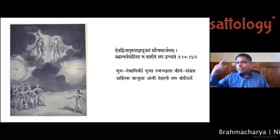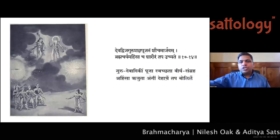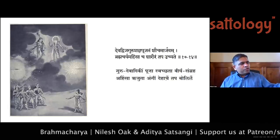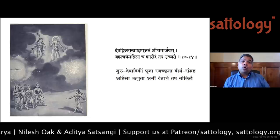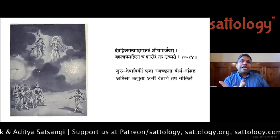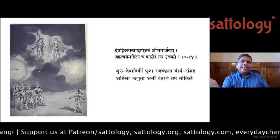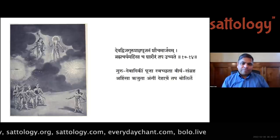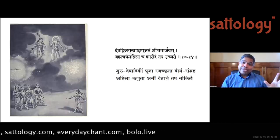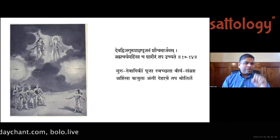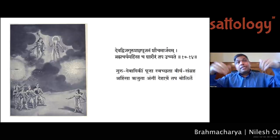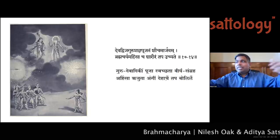The ashrama system is based on tremendous empirical data, and that's why as you said it cannot go away — no matter which country or place in the world. People may not call it by these names, but the reality remains. To simply explain to the masses, consider our life as 100 years, divided into four parts of 25 years each.